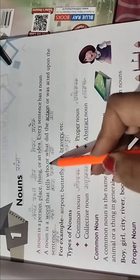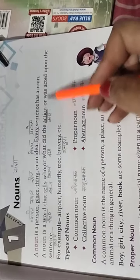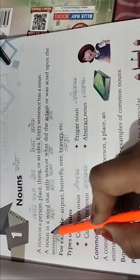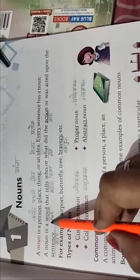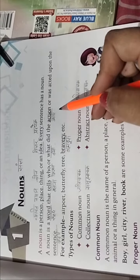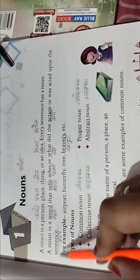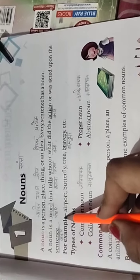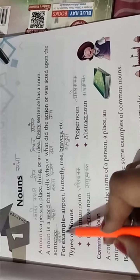Every sentence has a noun. A noun is a word that tells who or what did the action or was acted upon the sentence. For example, airport.